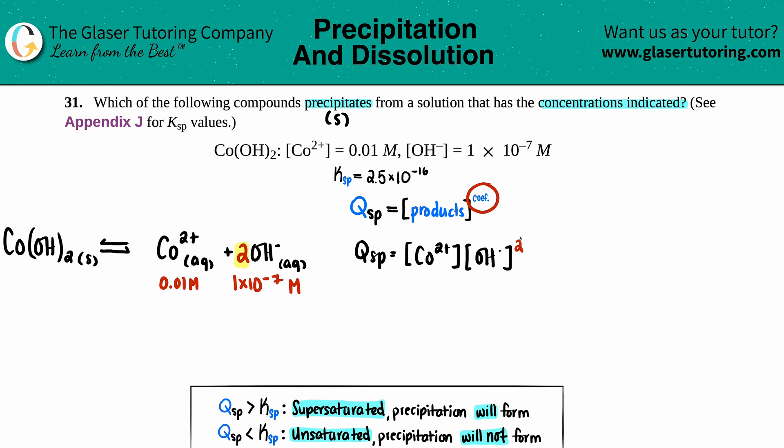We always raise it to the coefficients. There's a 1 in front of the cobalt, but raising to the first is the same as not writing anything. The cobalt was 0.01.